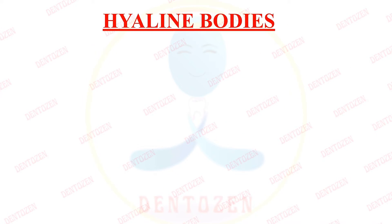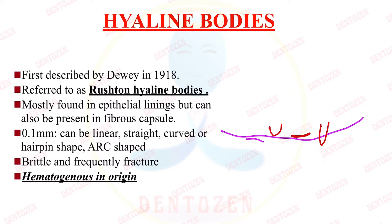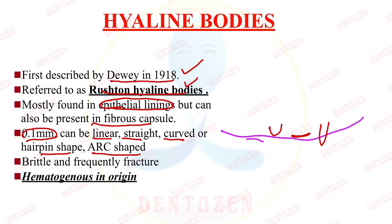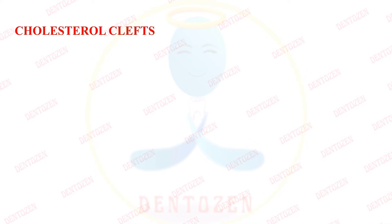Apart from Rushton bodies, we can also have hyaline bodies present close to the epithelial lining. These hyaline bodies can be arc-shaped, linear, curvilinear, or hairpin-shaped structures, and they are hematogenous in origin. They were first described in 1918; they are also referred to as Rushton bodies, mostly found in epithelial linings but can also be present in the capsule. Their size is 0.1 mm; they are brittle because they frequently fracture.